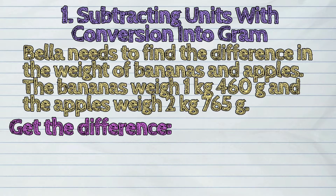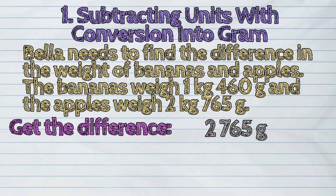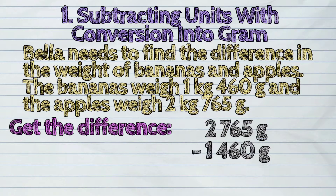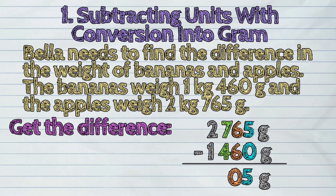Now let us get the difference. We start with the weight of apples, which is 2,765 grams, since it's the bigger number. Minus the weight of bananas, which is 1,460 grams. This gives the answer of 1,305 grams.